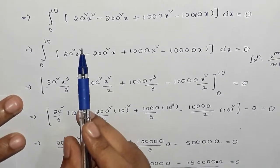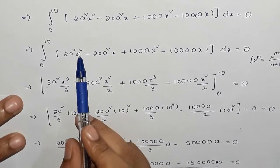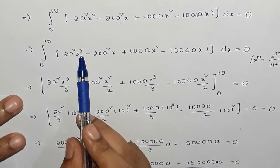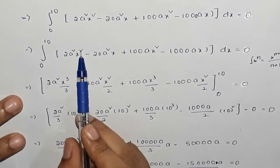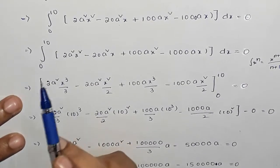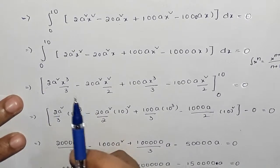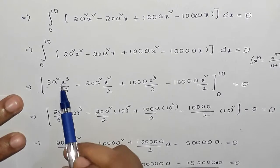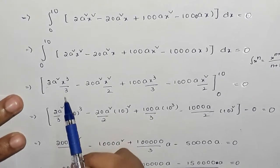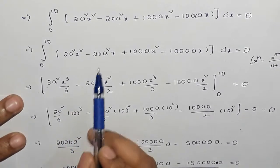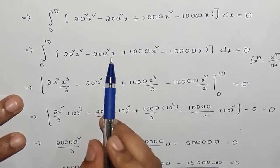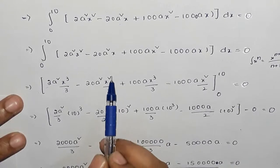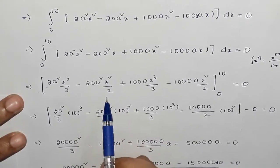Applying the formula: x squared integrates to x cubed by 3 (since n+1 = 3), and the term −20a·x squared integrates to give x squared by 2 with the appropriate constant.